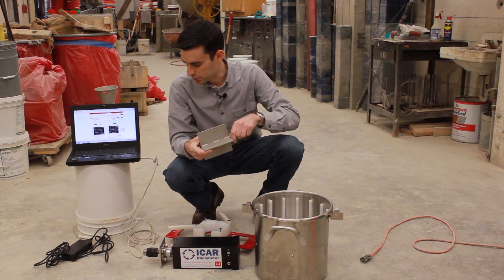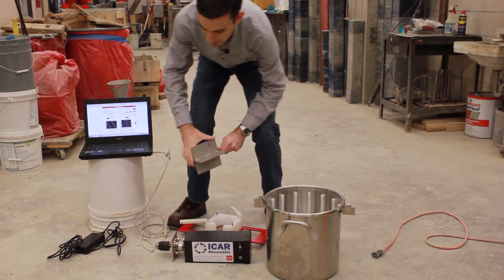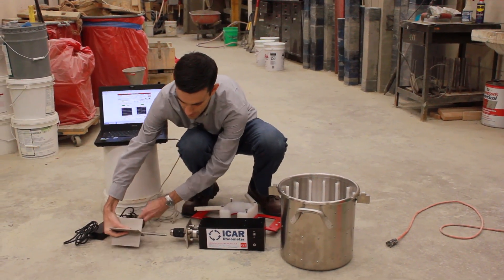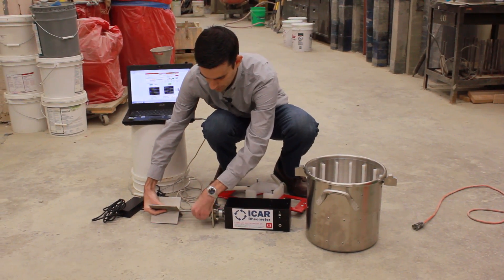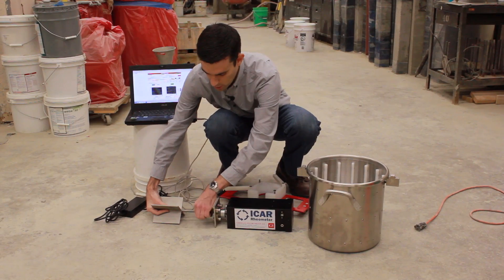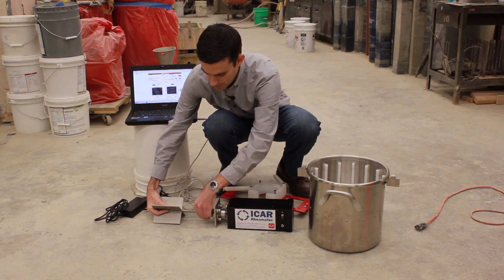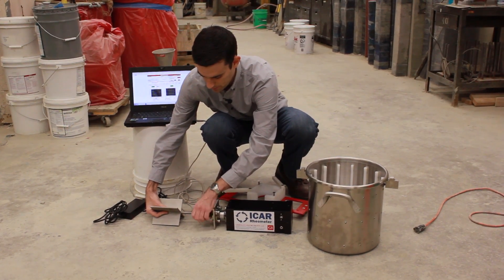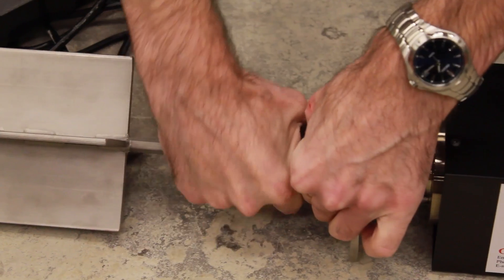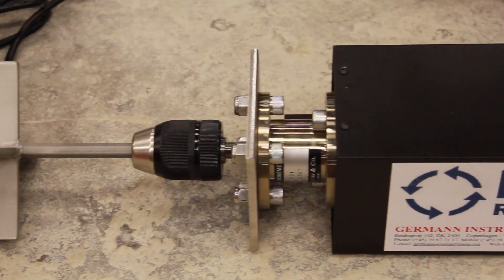So now to assemble the rheometer, what we'll do is insert the vane into the keyless chuck of the rheometer itself. We'll then tighten this down. We always put the stem of the rheometer all the way in, which means it will be positioned correctly at the correct height.